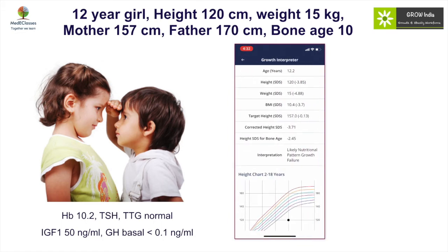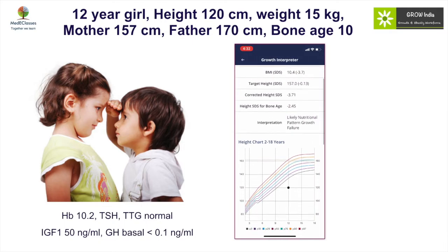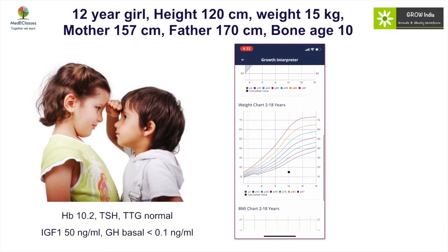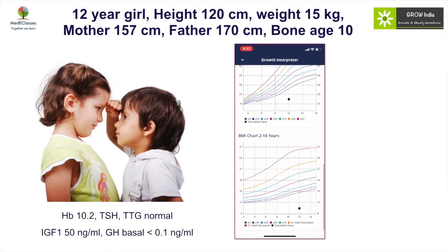When we plot this on the growth chart, we identify that this is clearly a case of nutritional pattern growth failure, as reflected by the growth charts which clearly show that the weight is more affected. So clearly in this situation, the diagnosis of growth hormone deficiency should not have been entertained.